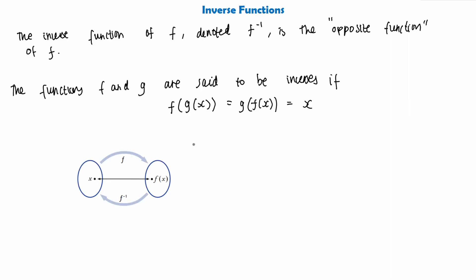To visualize this: when an input value x is worked through a function to give f of x, we do f inverse of f of x and this puts us back to where we started. So for example, if we have a function f of x equals 4x subtract 1, we would say that the inverse function is g of x equals x plus 1 over 4.